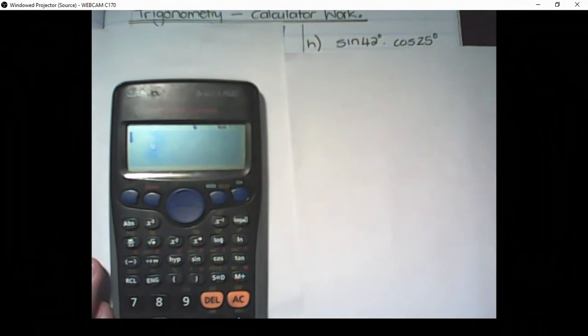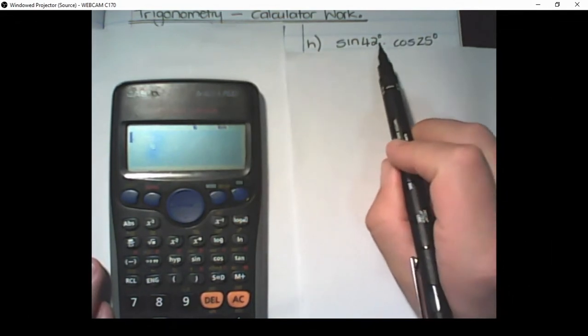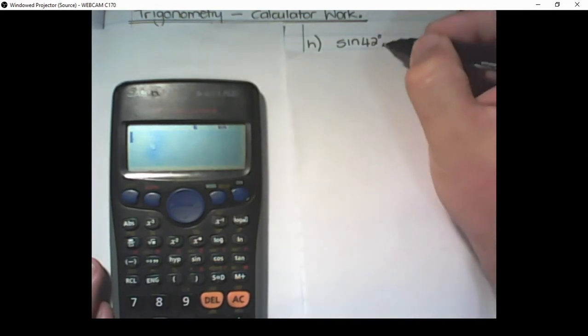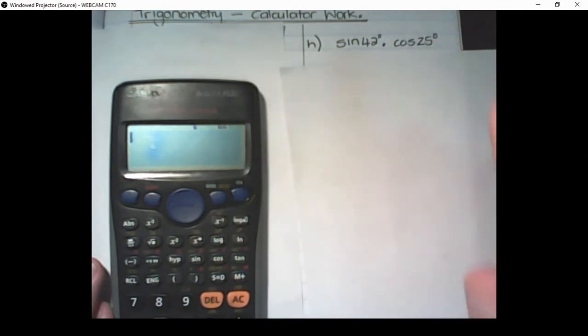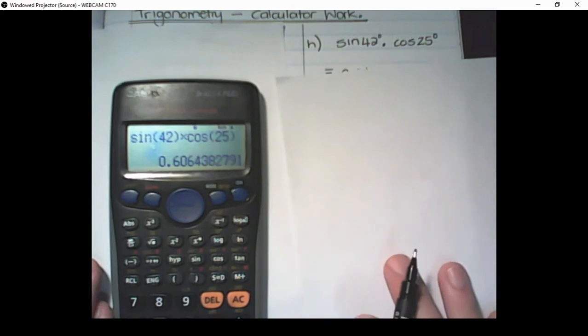We can also be asked to multiply different ratios. So this is sine of 42 times cos of 25. Now it's important the way we put it in on our calculator. So this is sine of 42. Sine of 42. I close the bracket. Multiply with cos of 25. And that answer is equal to 0.61.